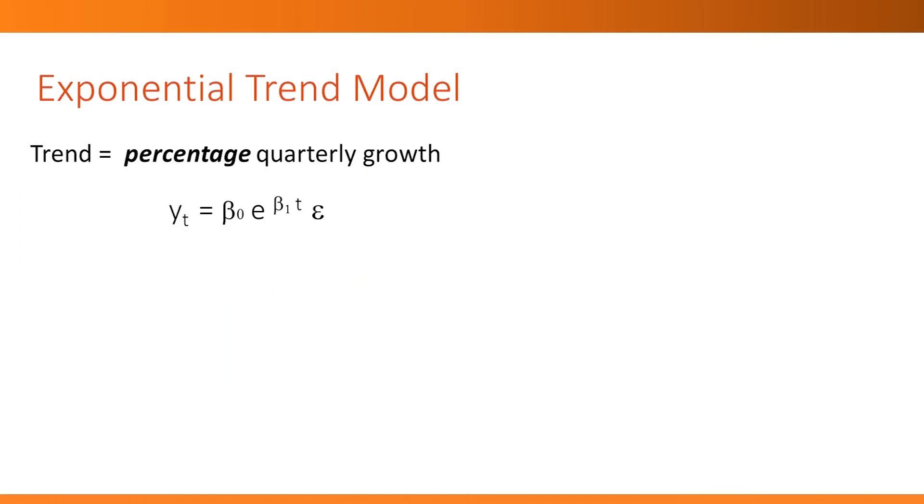An exponential trend model means that our trend is multiplicative. In our quarterly sales scenario, this would mean that sales grow by a percentage amount each quarter. In other words, the trend is the percentage change in sales from one quarter to the next. We can write such a relationship linking y sub t to an exponent of the trend, t, using this formula.